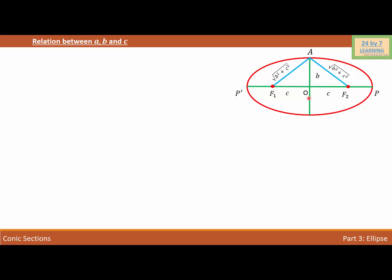Now I'm considering the foci F1 and F2. As you can see, OA is B because this is the semi-minor axis, and F1O is C, which is the distance between the focus and the center of the ellipse. Triangle AOF1 and triangle AOF2 are right triangles.